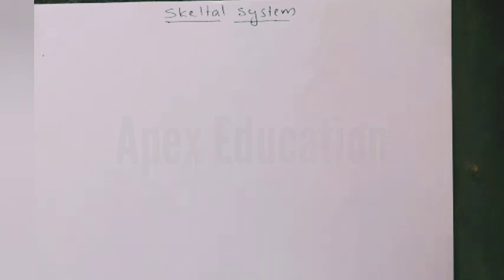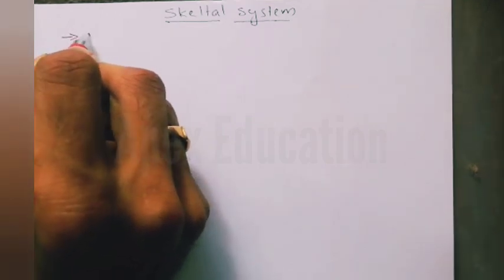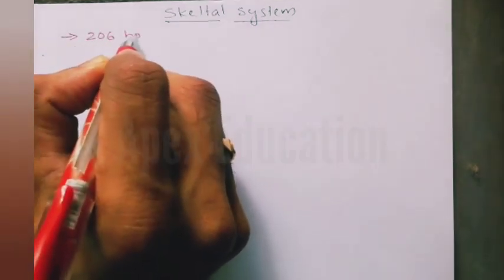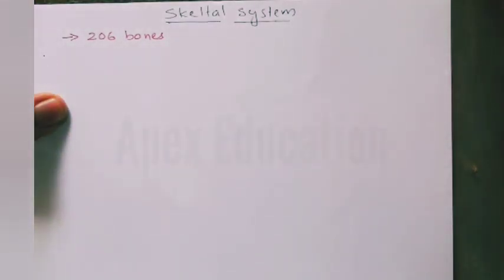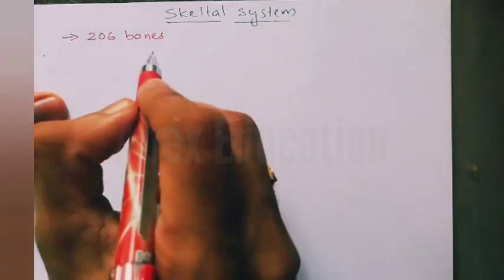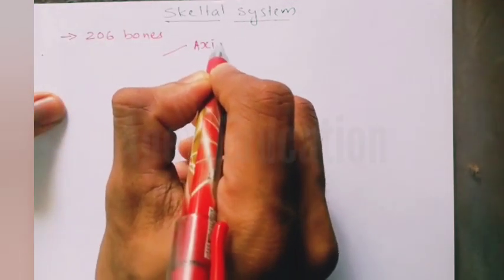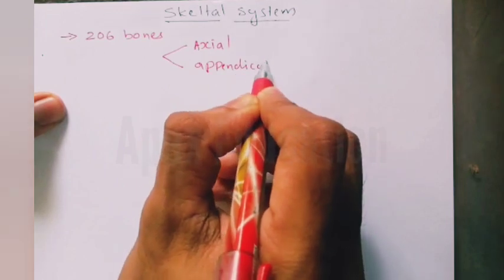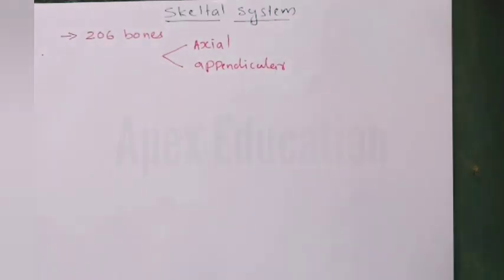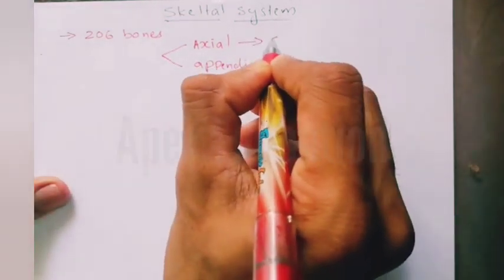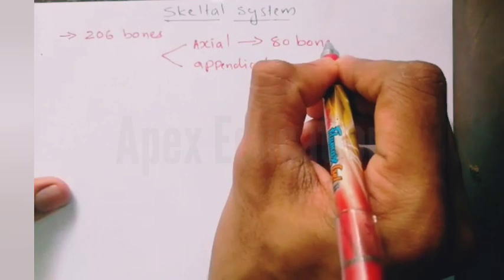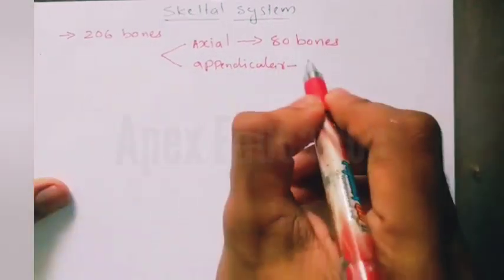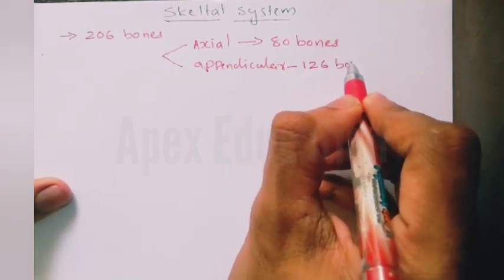Locomotion and movement — in that chapter, the skeletal system is one of the important topics. The skeletal system consists of 206 bones and is broadly classified into two types: the axial skeleton, which consists of 80 bones, and the appendicular skeleton, which consists of the remaining 126 bones.